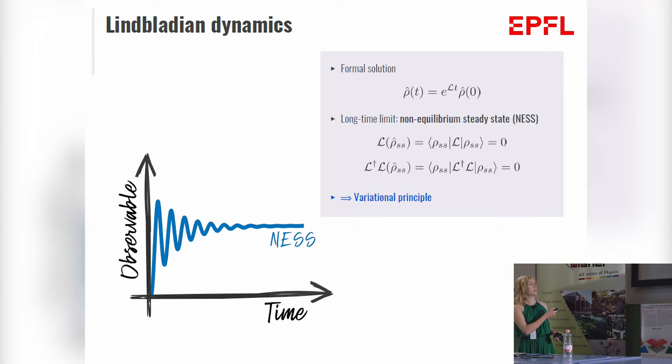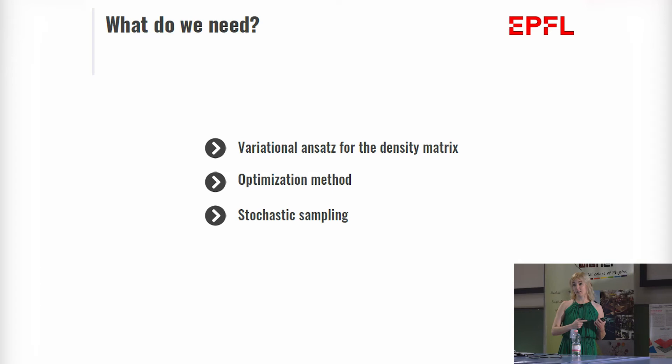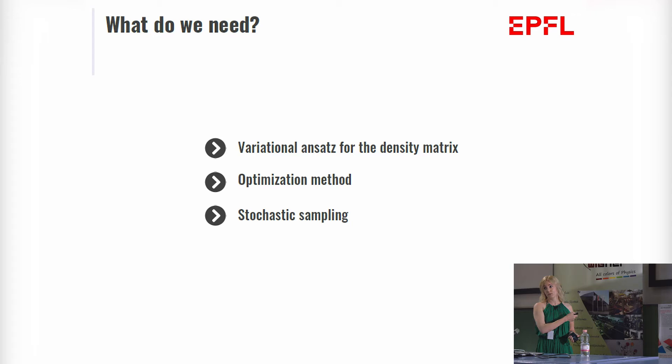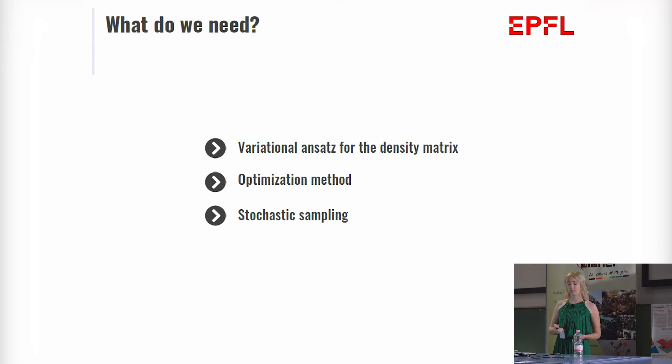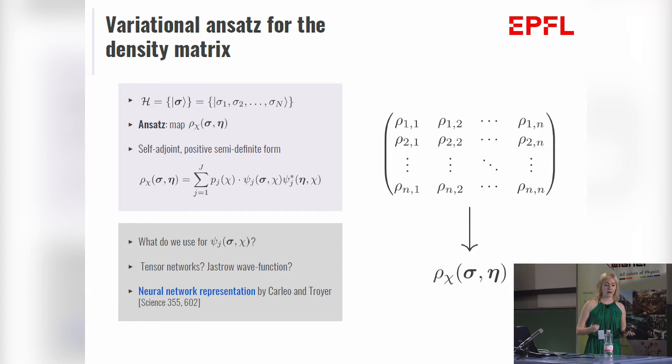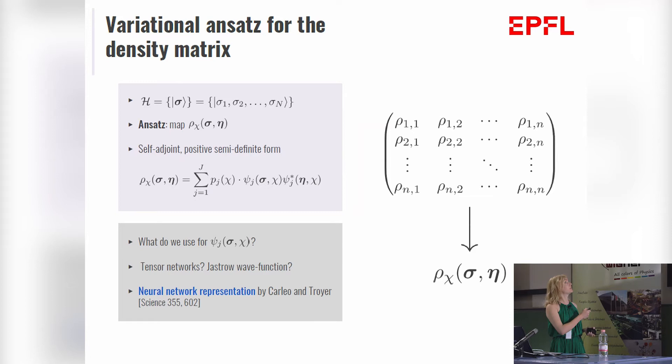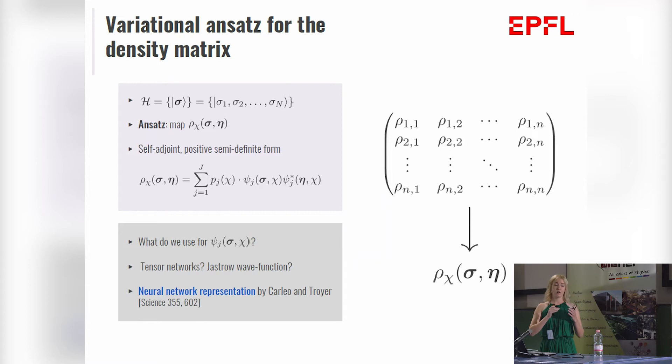So what do we need? We will need a variational ansatz. We will try to optimize it. And as I told you, we are not going to store these matrices, so we will need some type of stochastic sampling if we want to perform any type of operation. Let's start with our ansatz. From now on, I will assume a Hilbert space which is spanned in the computational basis, where sigmas are labeling the local degrees of freedom. I will also assume a two-dimensional local Hilbert space which applies to a wide number of spin-half models or qubits.